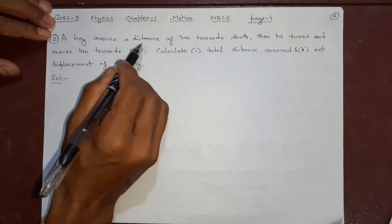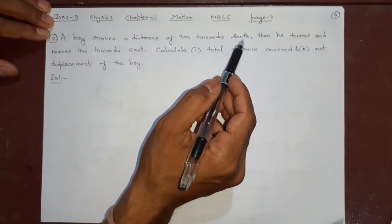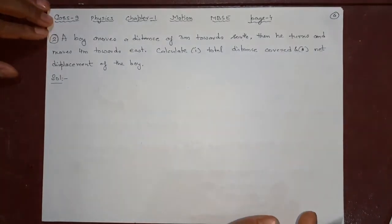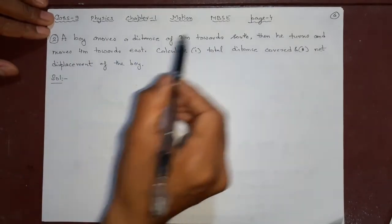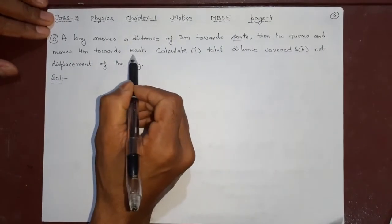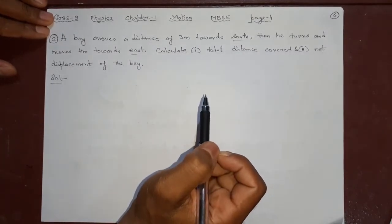Here we'll discuss the problem like this: A boy moves a distance of 3 meters towards south, then he turns and moves 4 meters towards east. Important is direction - south, then east. What is the total distance covered? What is the displacement that you have to find?